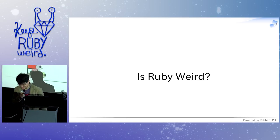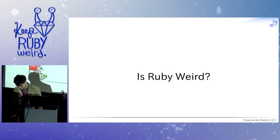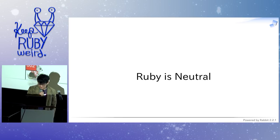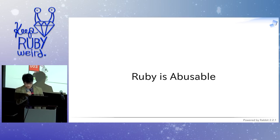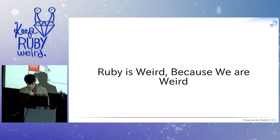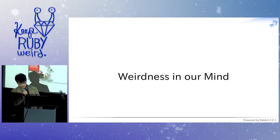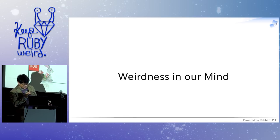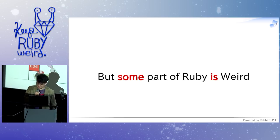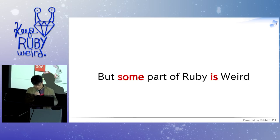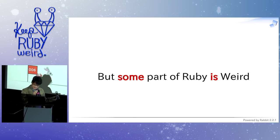Is Ruby weird? What's your opinion? Ruby weird — yes or no? Ruby's neutral? Ruby is only abusable. So Ruby is weird because we are weird. Weirdness is in our mind. So we are weird, so we program Ruby weirdly, so Ruby is weird. But actually, I admit some part of Ruby is weird. So I'm going to talk about this weird thing today.